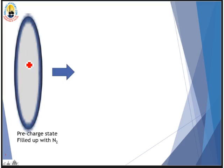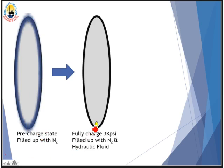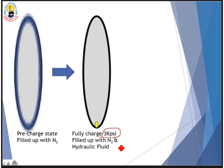State number two: after we pre-charge with nitrogen, we pump hydraulic fluid into the bottle. The bottle is already filled with nitrogen, and now we continue charging hydraulic fluid into it up to the maximum system working pressure. In this example we take 3000 psi as the maximum system working pressure.